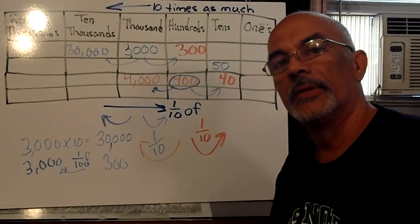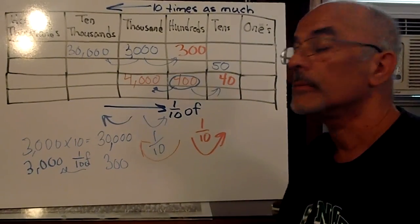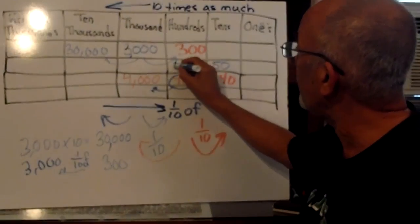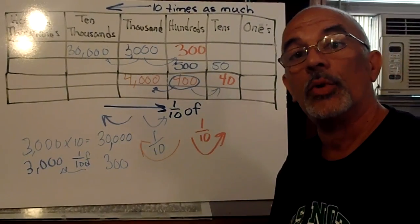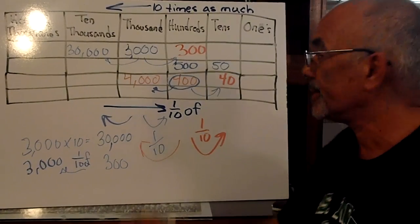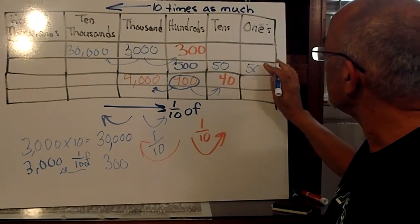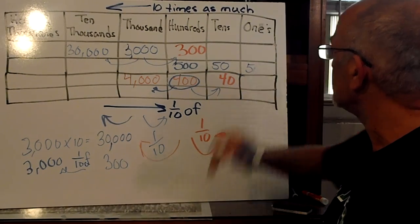Can you guess what 10 times 50 would be? You're right. 500. And guess what 1 tenth of 50 is. Are you going the other direction? 5.